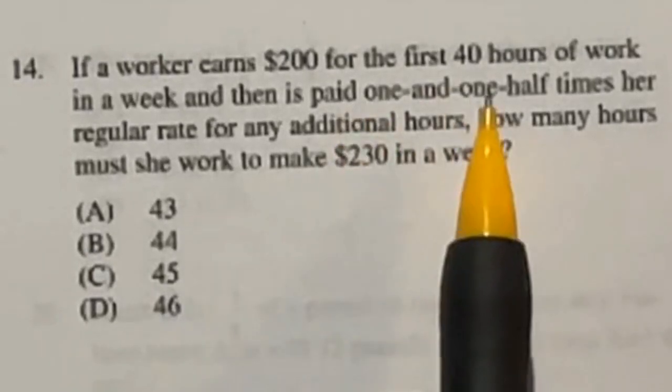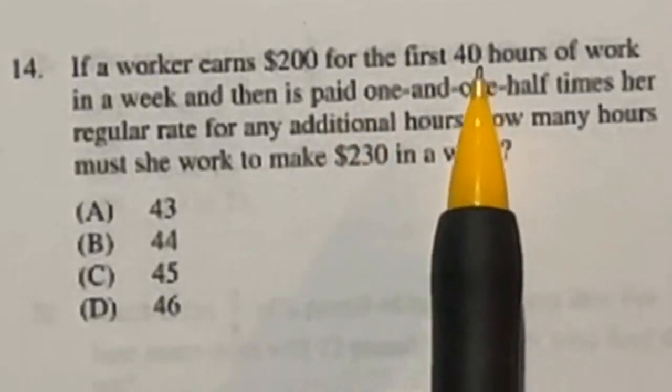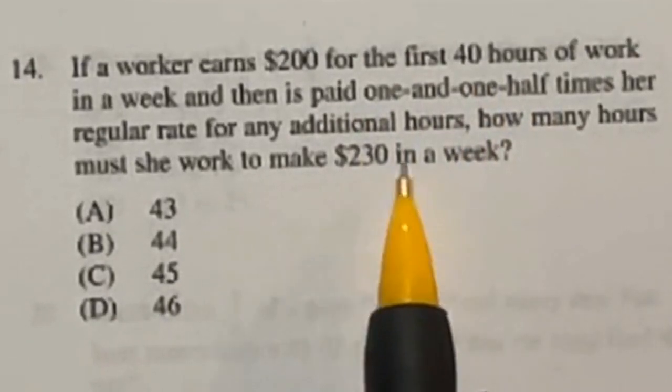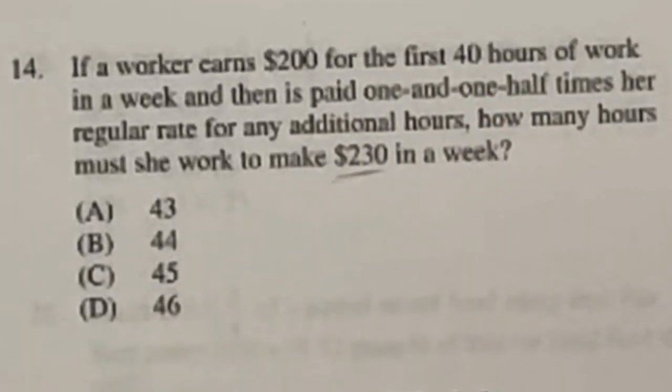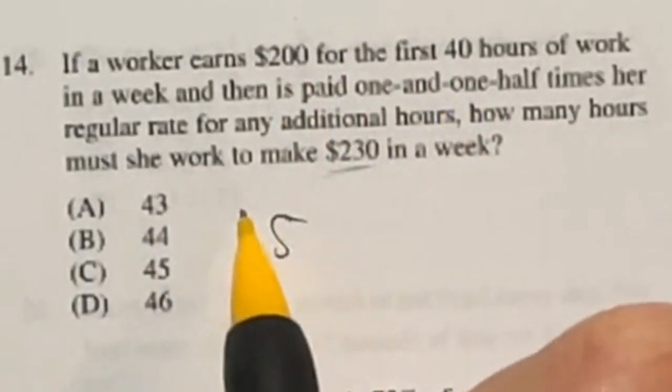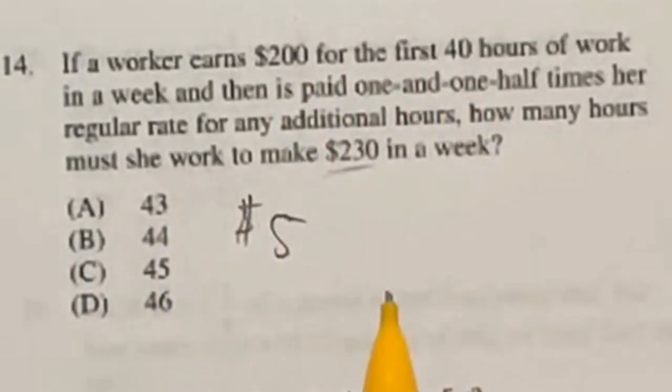You get paid $200 for working 40 hours a week. After those 40 hours, you get paid time and a half. Now they want to know how many hours you would have to work to get to $230. Well, first off, 200 divided by 40 is 5, meaning they're only making $5 an hour.